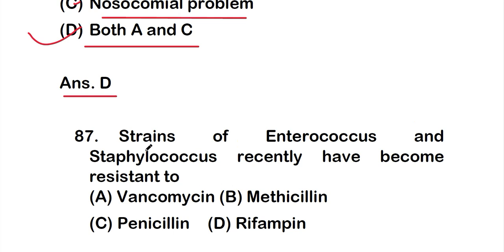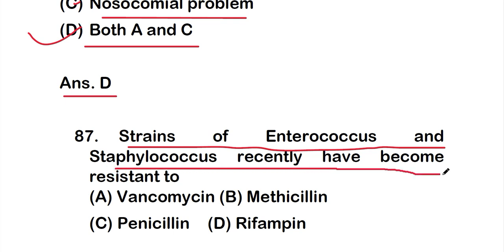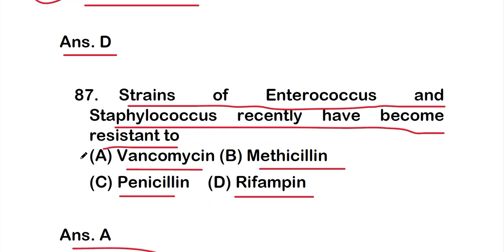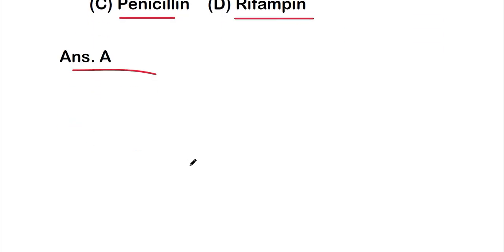Question number 87: Strains of Enterococcus and Staphylococcus recently have become resistant to — option A: vancomycin, option B: methicillin, option C: penicillin, option D: rifampin. The correct answer is option A — vancomycin. Strains of Enterococcus and Staphylococcus have recently become resistant to vancomycin antibiotics.